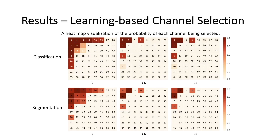The heat-map results show that low-frequency and luma components are preferred over high-frequency and chroma components. This principle holds among multiple computer vision tasks.